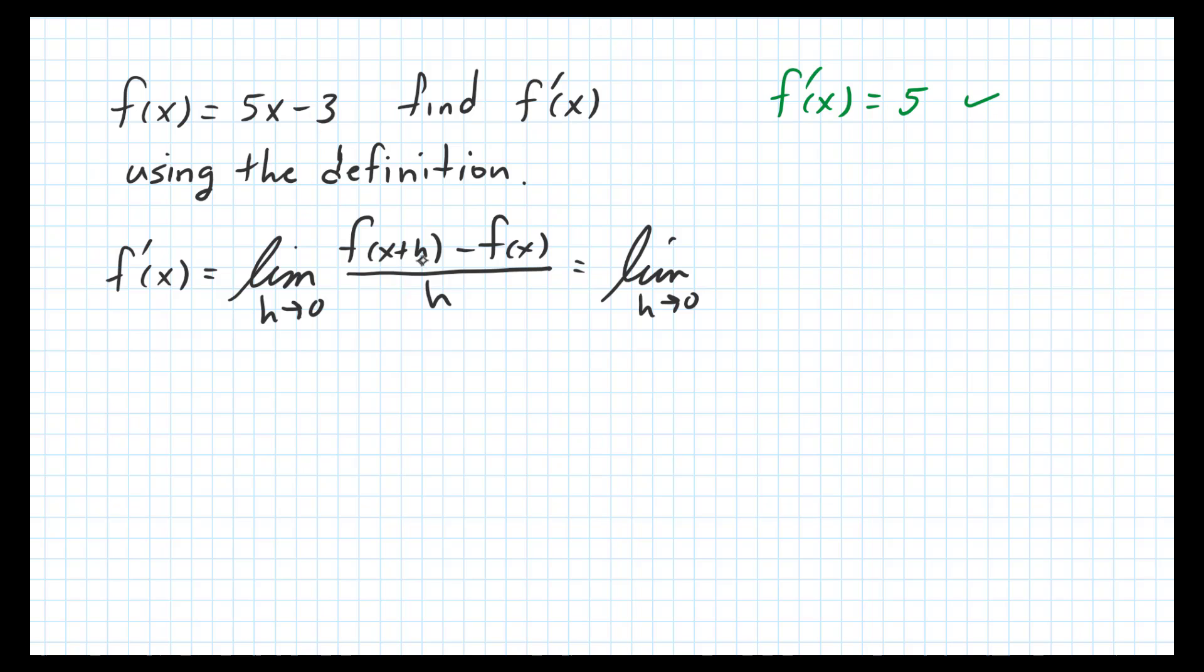To find f(x+h), we plug in x+h wherever we see an x in the original function, so that's going to be 5 times (x+h) minus 3, and then minus the original function f(x), which was 5x - 3. We have to be careful here, let's put that in parentheses because we'll have to distribute this negative 1.